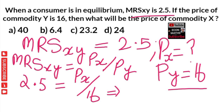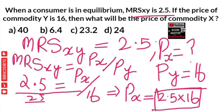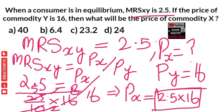When we solve this, we get price of X equal to 2.5 multiplied by 16. We can write 2.5 as 25 divided by 10, multiplied by 16. Simplifying: 25 divided by 10 into 16 gives us 5 into 8, which equals 40. So the price of X works out to 40.